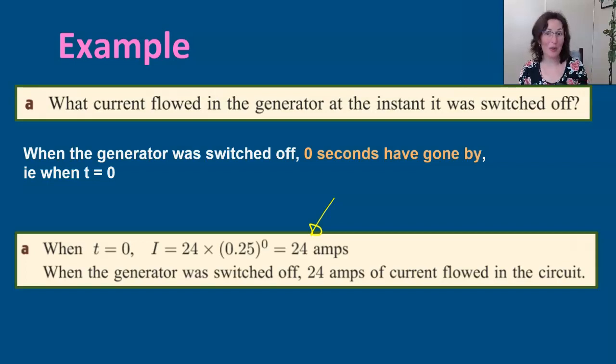These are worded problems, so it's really great to answer with a sentence, with words as well. So when the generator was switched off, 24 amps of current flowed in the circuit. That's putting it into context.